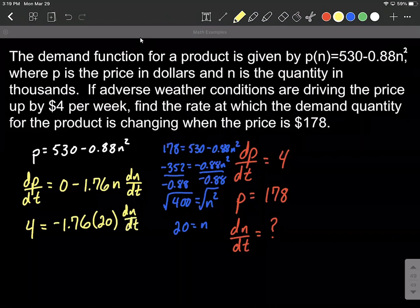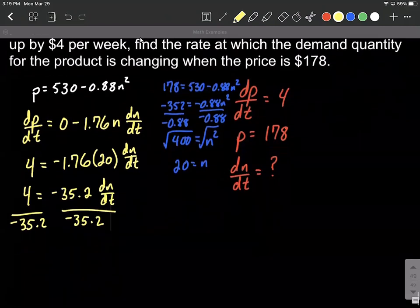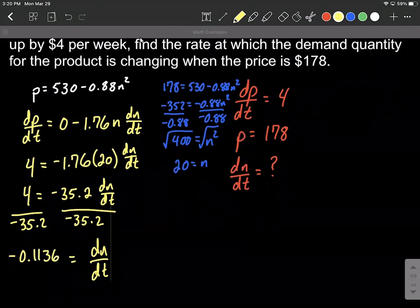And now we'll do a little bit of solving down for dN/dt. So multiplying the negative 1.76 times 20 is negative 35.2 dN/dt. Divide both sides by that negative 35.2. That'll get dN/dt on one side all by itself, which we're trying to solve for. And I got this to equal negative 0.1136 repeating.